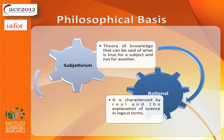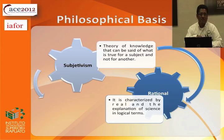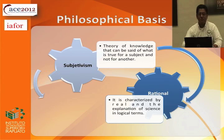Now let's talk about the philosophical basis: subjectism and the rational. Subjectism talks about the theory of knowledge that can be true for one subject but not for another — meaning that an idea or social experience may be understood differently by different people. The rational is characterized by the real explanation of science in logical terms. For example, the water cycle is true for everyone because it is a scientific explanation that is logical for everybody.